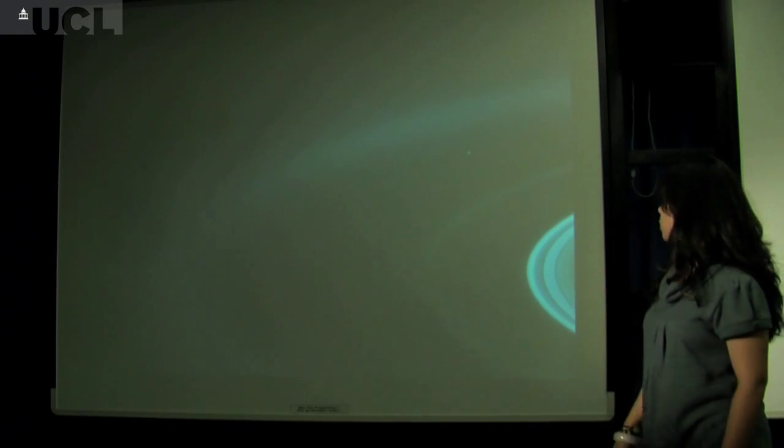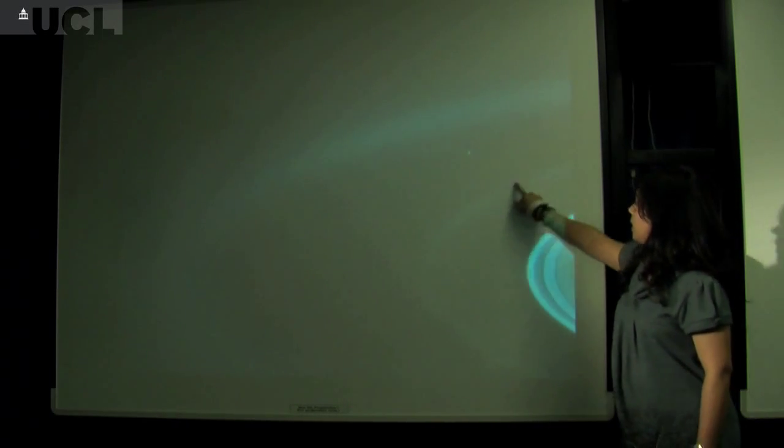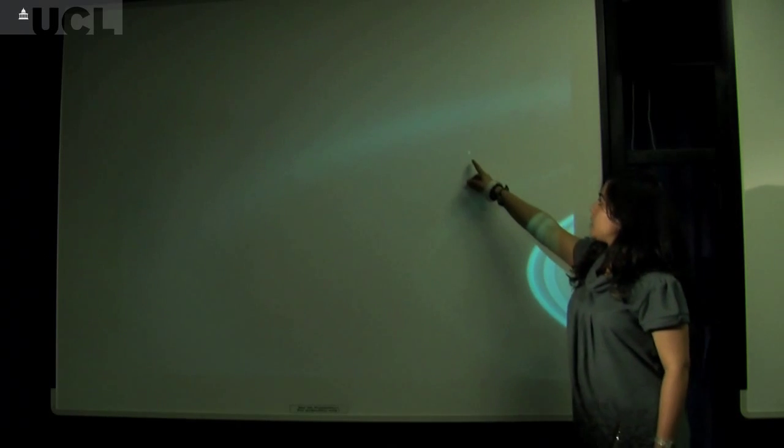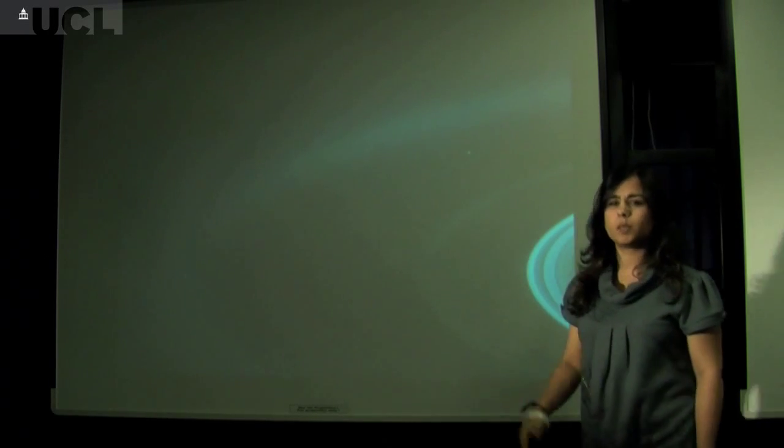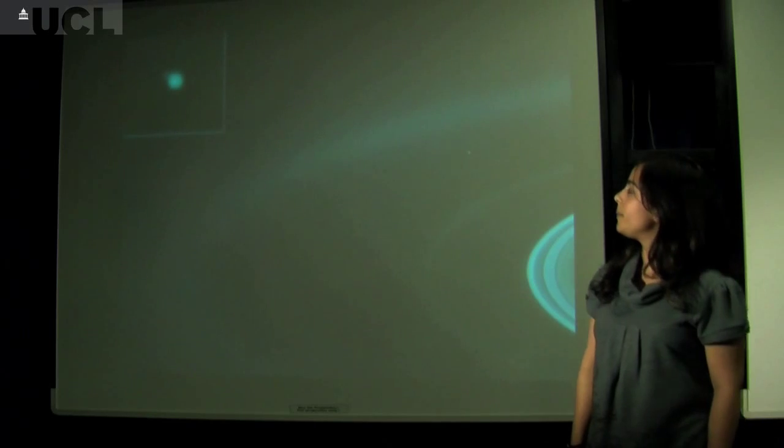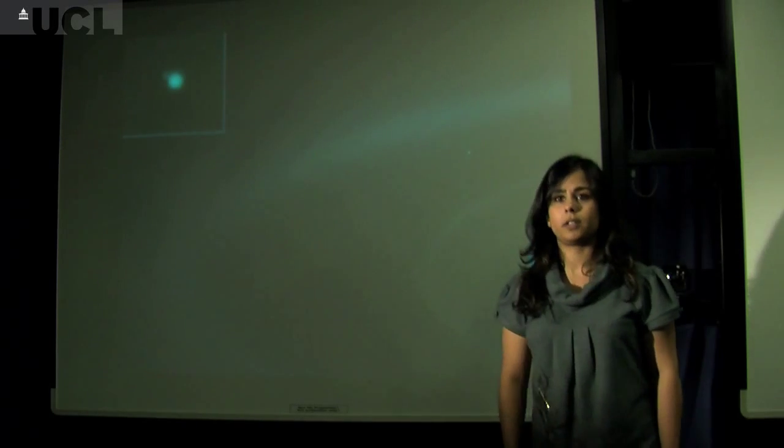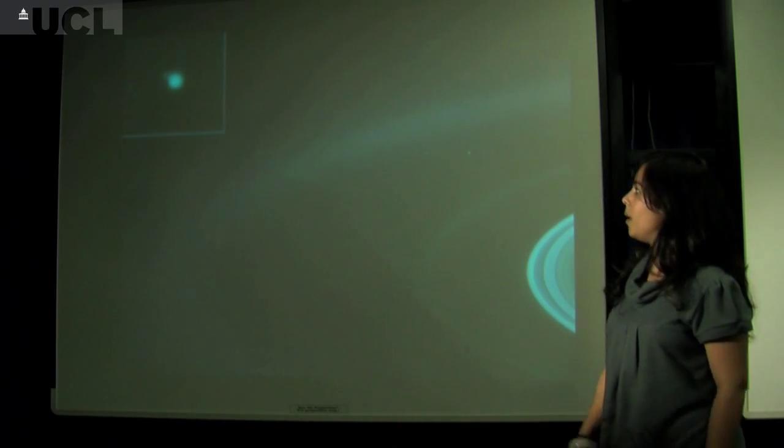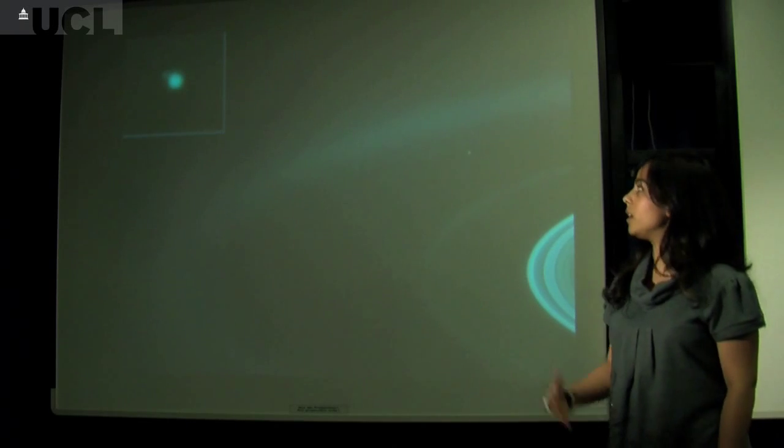If you zoom in on the top right hand corner, you can see the rings here again. Here you can see this tiny little blue dot, and it looks pretty insignificant. But if we zoom in on it, that is what the Earth looks like from Saturn. It's a pretty humbling experience seeing our planet from someone else's perspective.